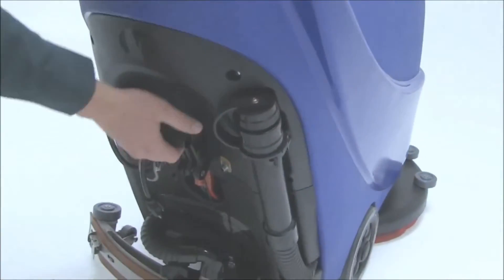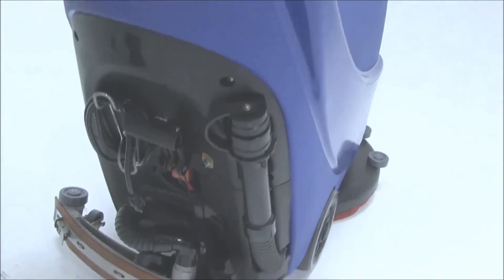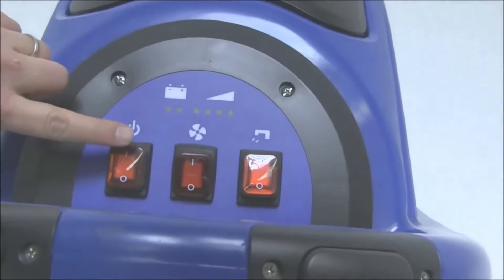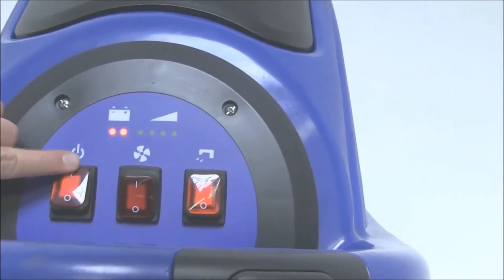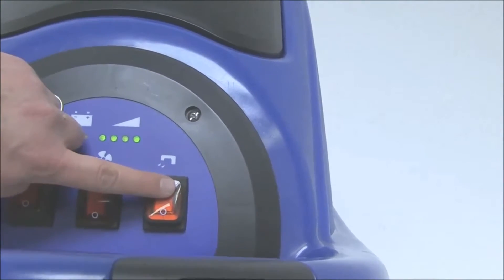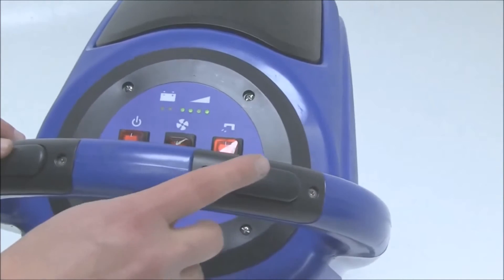You have a hand lever to lower and raise the squeegee blade. Very simple controls on the machine. You have your main power button, your vacuum, and your water. To activate the scrub brush, you can hit either the left or the right trigger.